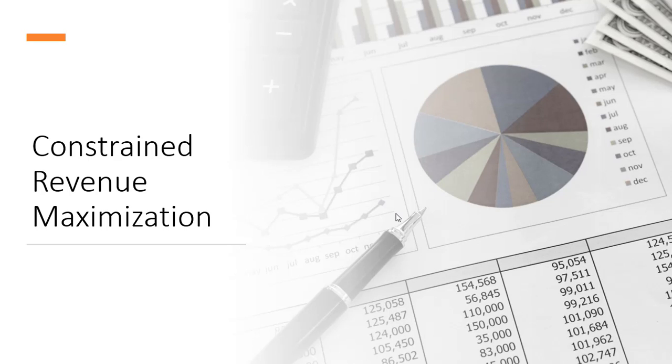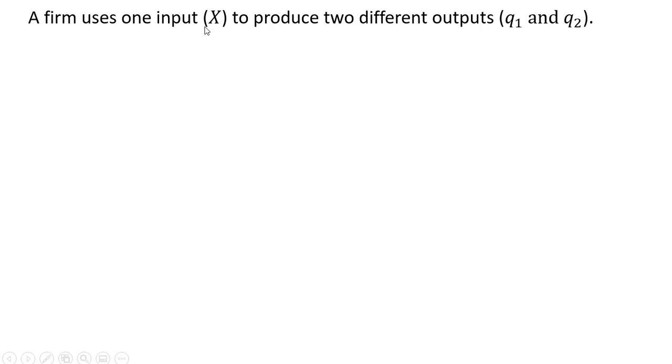Hello, in this video we're going to do a constrained revenue maximization problem. A firm uses one input x to produce two different outputs, good 1 and good 2.